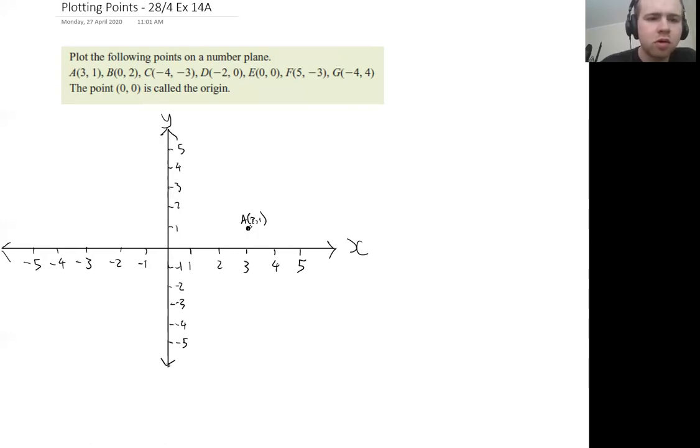For our next point B, it's zero on the x, which means we should maybe add a little zero in here. It's going to be on this y-axis if the x value is zero, and then it's going to be up y on the two. So that is B.